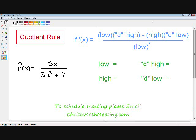And when I write low, that refers to the denominator. When I write high, that refers to the numerator. When I write d high, that refers to the derivative of the numerator, and d low refers to the derivative of the denominator.